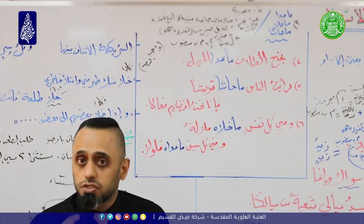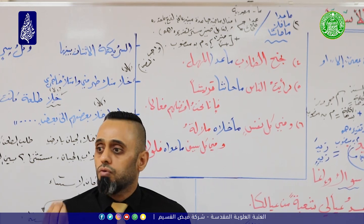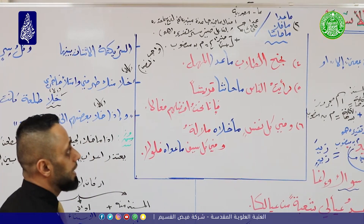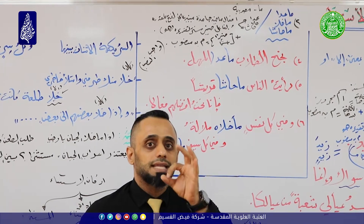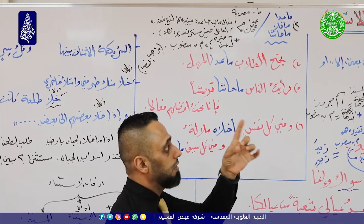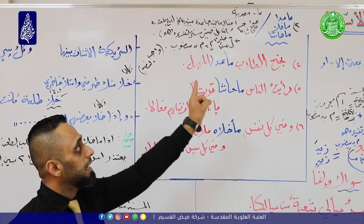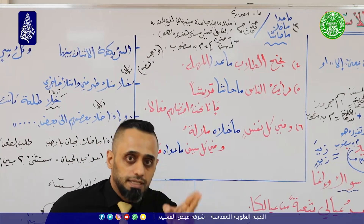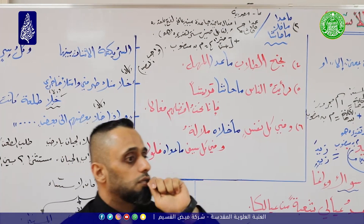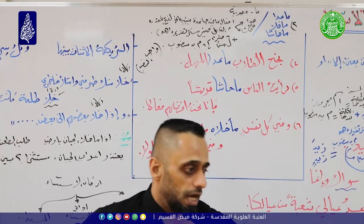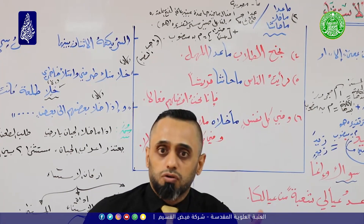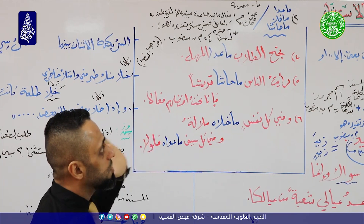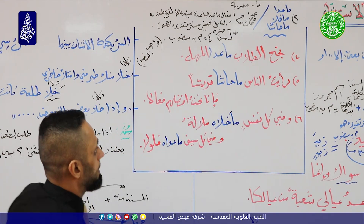سؤال وزاري: متى تتأكد فعلية عدا وخلا وحاشا؟ الجواب: عندما تُسبق بما المصدرية. متى تتأكد بمعنى توكيد وهو إزالة الشك والغموض، يعني متى نقوّي معنى الأفعال فيها؟ إذا كانت عدا وخلا وحاشا مسبوقة بما المصدرية.